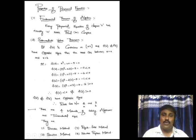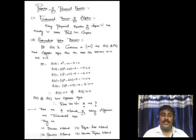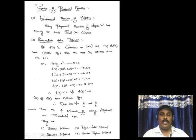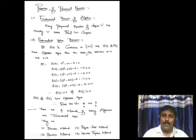The second property is the Intermediate Value Theorem, which is also very important. It states: if f(x) is continuous on a closed interval [a, b], and f(a) and f(b) have opposite signs — meaning one is negative and the other is positive — then a root lies between x = a and x = b.